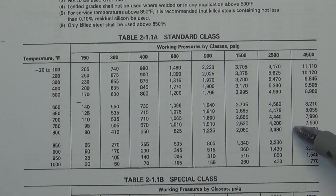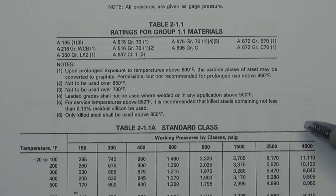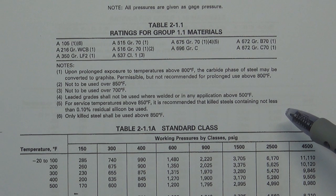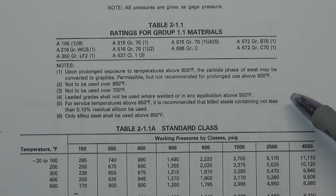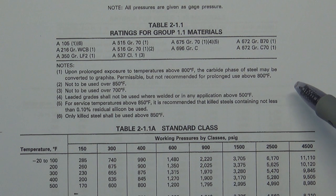When you look at this table, two things you need to be concerned about. First is the material. In the valve industry, we use a lot of different materials to make valves — for example, WCB, WC6, CF8, and CF3. Different materials have different properties, so we cannot use one pressure-temperature table for all materials. That is impossible and also not accurate.